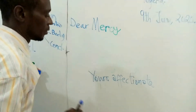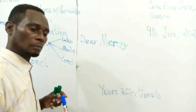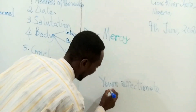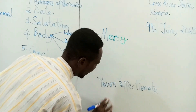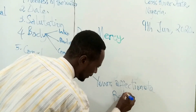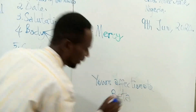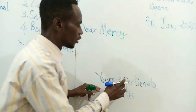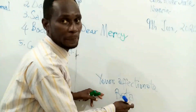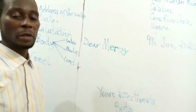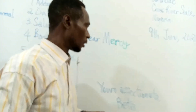Who is writing to Mercy? Let's say Beta. So it would be 'Yours Affectionately, Beta.' You don't have to put your surname there — just your first name. We also have 'Love From' as another conclusion formula. In conclusion, just as in salutation, it depends on the intimacy of the person you are writing to.